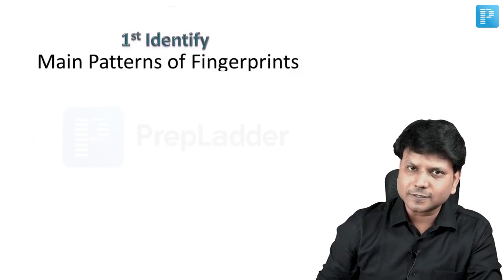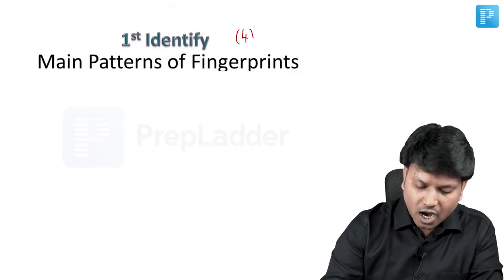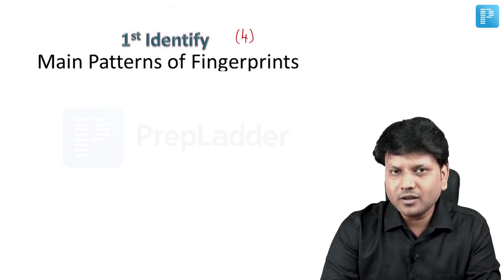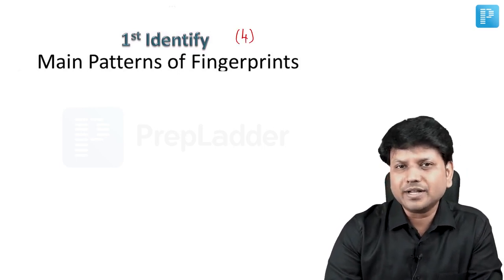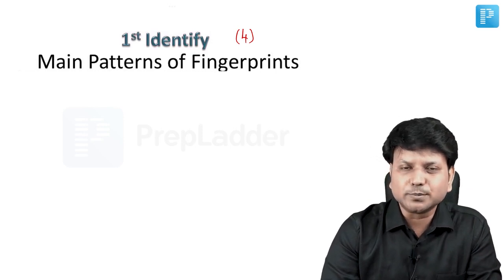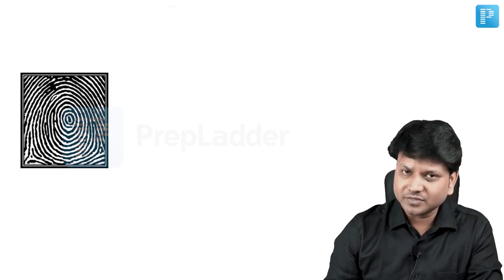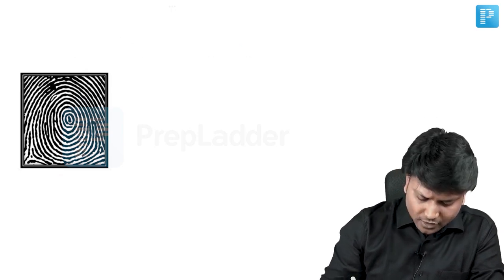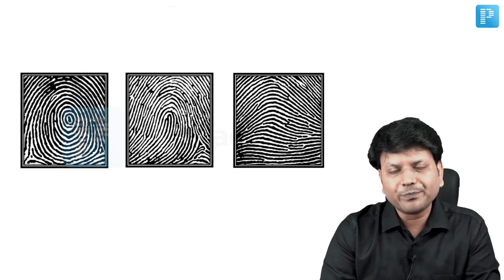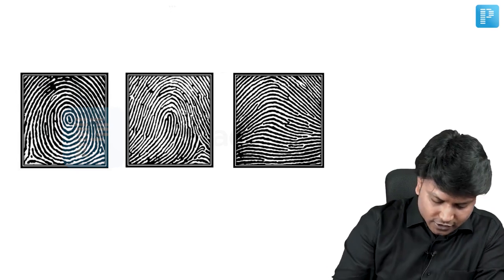There are basically four fingerprint patterns: loops, whorls, arch, and composite. Composite is a mixed pattern when there is more than one pattern in the region. The loop pattern is where the ridge starts from one side and comes back to the same side. Whorls are spiral patterns. Arch is where the ridge starts from one side, moves to the top, and continues to the opposite side.